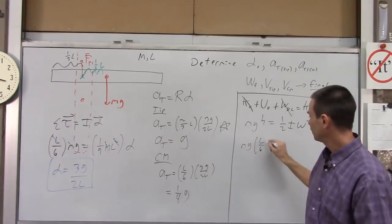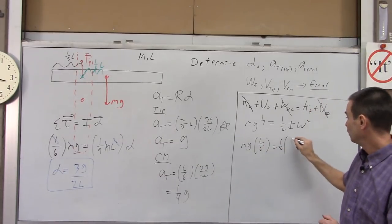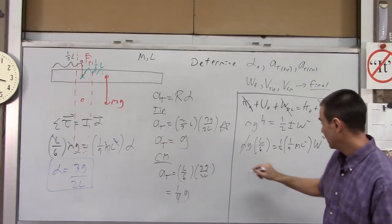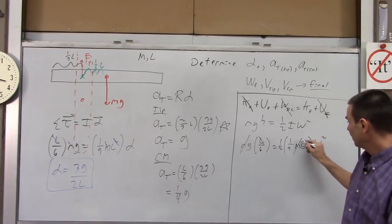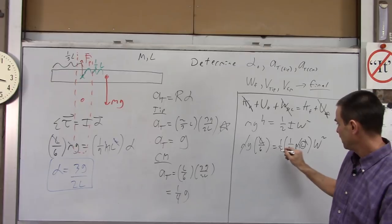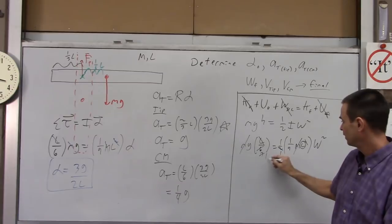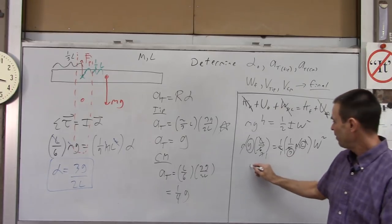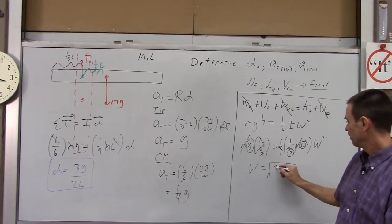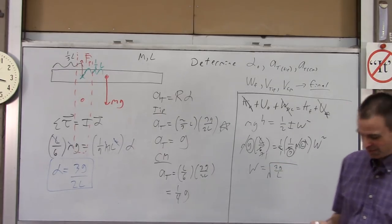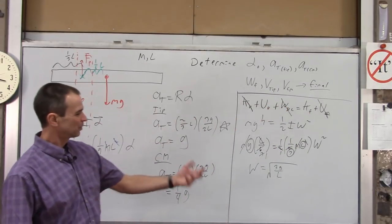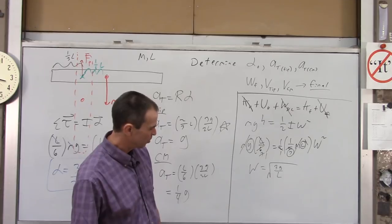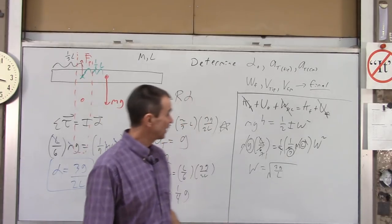With I = (1/9)mL², we have mgL/6 = (1/2)(1/9)mL²·ω². Mass cancels, one L cancels. The 2 and 6 cancel to give a 3; the 3 and 9 cancel to give a 3. Solving for omega: ω = √(3G/L). For example, if L is one meter, ω = √29.4 rad/s.